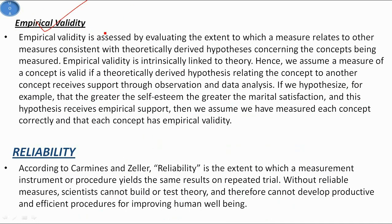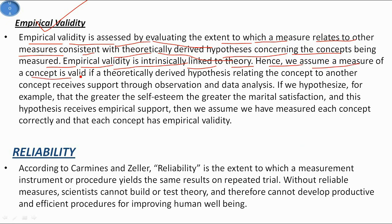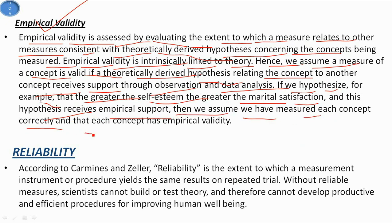Empirical validity is assessed by evaluating the extent to which a measure relates to other measures, consistent with theoretically derived hypotheses concerning the concept being measured. Empirical validity is intrinsically linked to theory. We assume a measure of a concept is valid if theoretically derived hypotheses relating the concept to another concept receive support through observations and data analysis. For example, if we hypothesize that greater self-esteem leads to greater marital satisfaction, and this hypothesis receives empirical support, then we assume we have measured each concept correctly and that each has empirical validity.